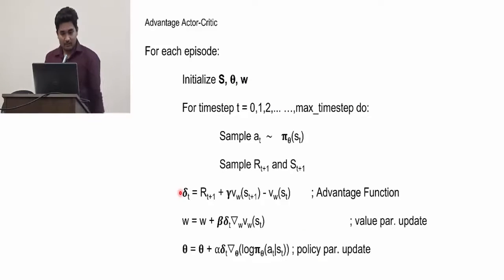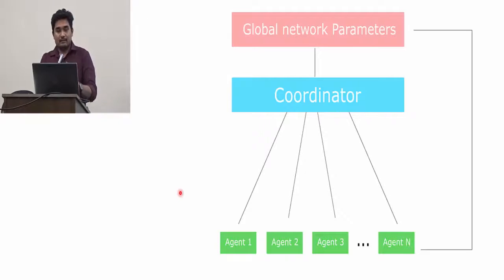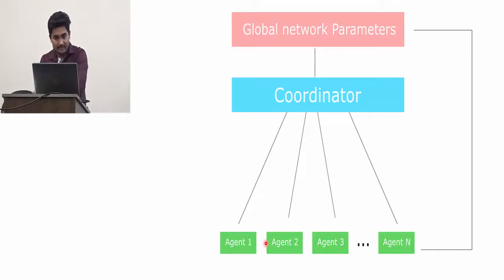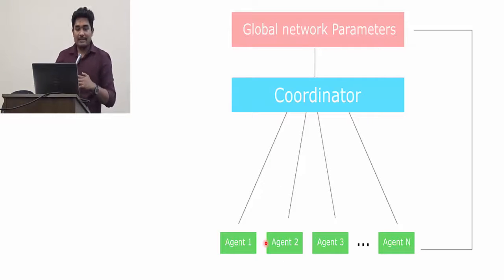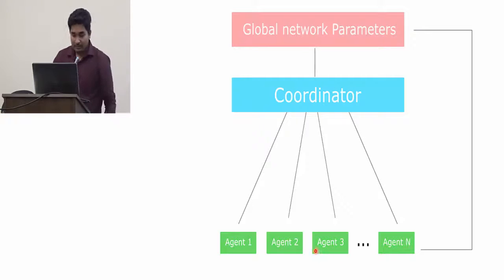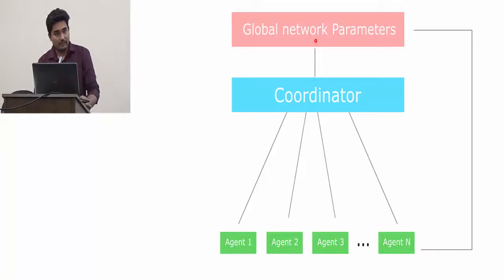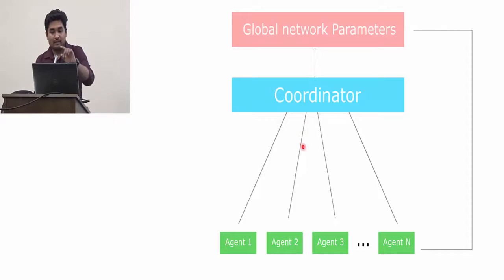In A3C, each network is put into many agents that work independently. If an episode is over for an agent — say one of many Marios playing the Mario environment dies or reaches the final state — it sends its parameters to a coordinator. The coordinator updates the global network based on the gradient. It works asynchronously: the coordinator does not wait for gradients from other agents.